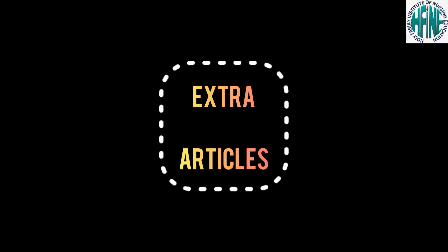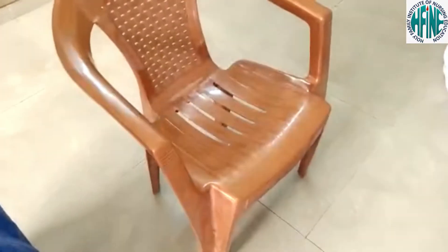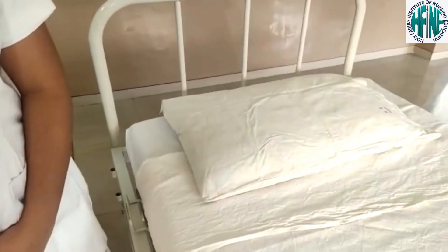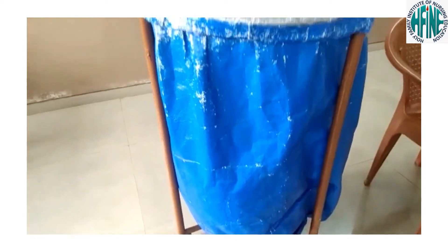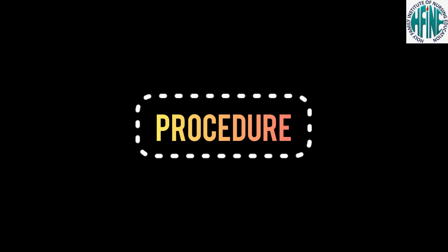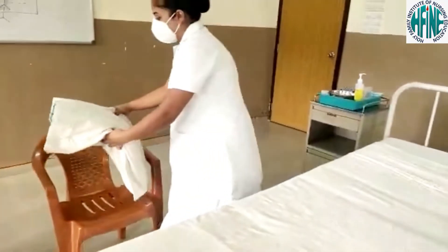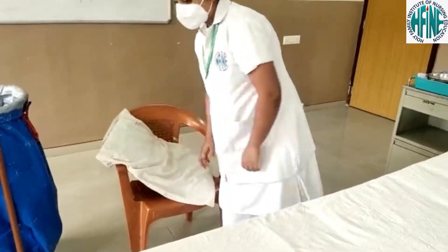Extra articles: chair to keep the articles, pillow to provide comfort, linen trolley to discard soiled linen. Procedure: wash hands to prevent cross infection. Remove the pillow and place it on the seat of the chair with the open end away from the entrance.